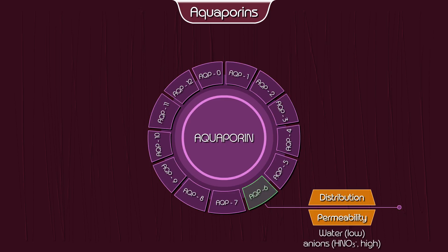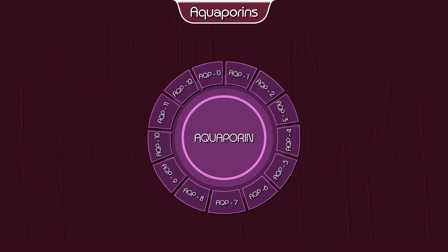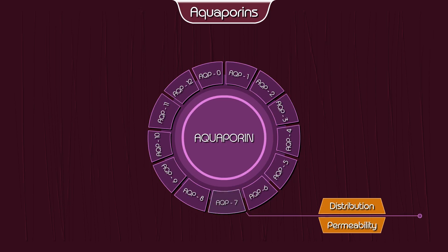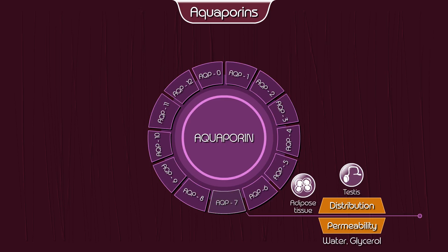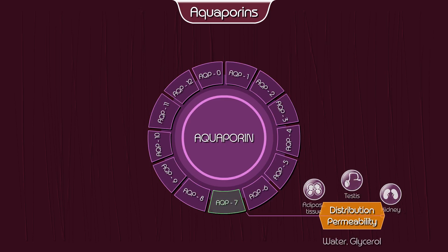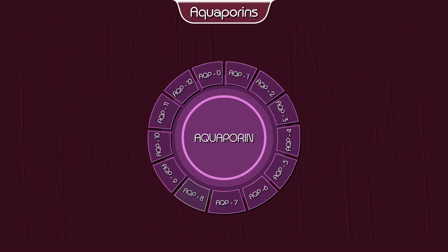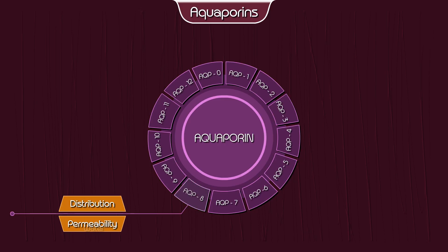Aquaporin 5 — permeability: water; distribution: the lungs, salivary glands, trachea, cornea, and lacrimal glands. Aquaporin 6 — permeability: water and anions; distribution: the kidney. Aquaporin 7 — permeability: water and glycerol; distribution: adipose tissue, testes, and kidney.